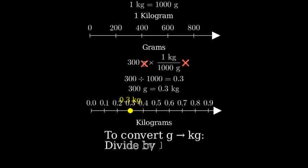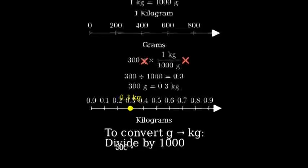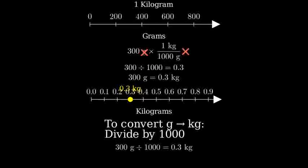to convert from grams to kilograms, divide by 1,000. In our example, 300 grams divided by 1,000 equals 0.3 kilograms.